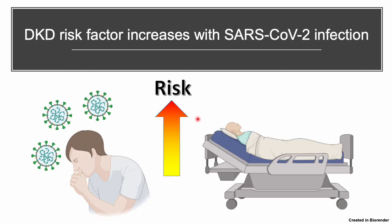This condition has irreversible damage and its risk factor increases with SARS-CoV-2 infection. It is noteworthy that the continuing global spread of SARS-CoV-2 and the latent morbidity and mortality of COVID-19 increases with comorbidities, such as diabetic kidney disease.